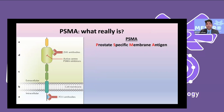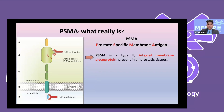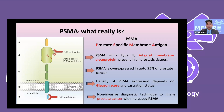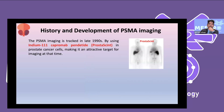PSMA stands for prostate-specific membrane antigen. It is a glycoprotein present in all prostatic tissue but overexpressed in prostate cancer cells — approximately 95% of prostate cancer cells overexpress PSMA. The density of expression depends on the Gleason score and castration status, and overexpression increases when patients become castration-resistant. The initial PSMA was discovered in the early 1990s, but image quality was limited by biodistribution.